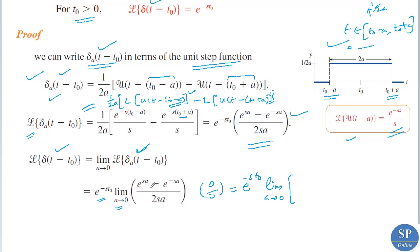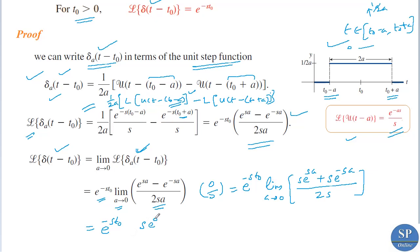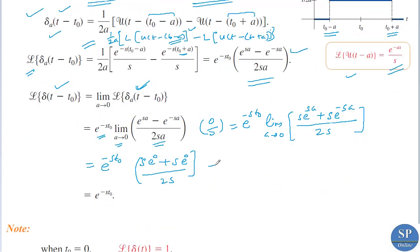By L'Hôpital's rule, differentiating the numerator (e^(sa) − e^(−sa)) with respect to a gives s·e^(sa) + s·e^(−sa), and differentiating the denominator 2sa gives 2s. Applying the limit as a → 0, we get e^(−st₀) · (s·e⁰ + s·e⁰) / (2s) = e^(−st₀) · (s + s) / (2s) = e^(−st₀) · 2s / 2s = e^(−st₀). So the Laplace transform of the Dirac delta function is e^(−st₀).